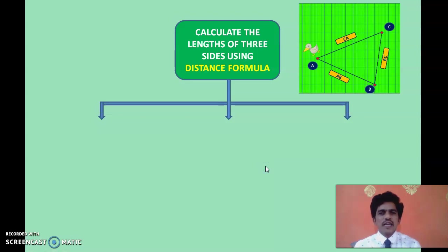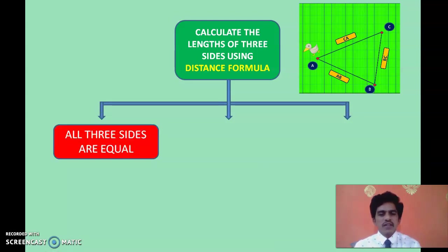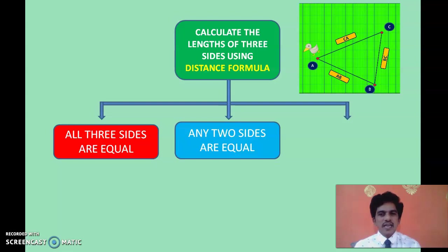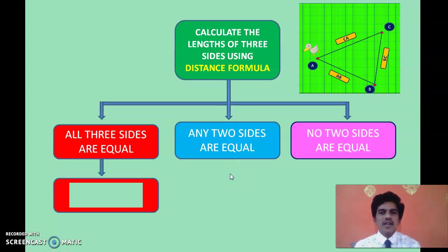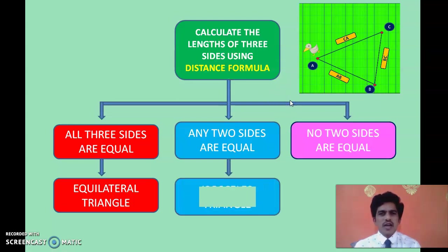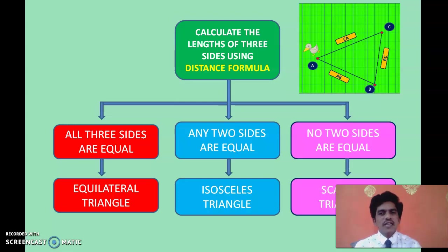In case of triangles, you have 3 different cases. Case 1: all 3 sides are equal — equilateral triangle. Case 2: any 2 of the 3 sides are equal — isosceles triangle. Case 3: no 2 sides are equal, meaning all 3 sides have different lengths — scalene triangle. We have been learning about types of triangles since early classes. If 3 sides are equal it's equilateral, if 2 sides are equal it's isosceles, and if all 3 sides are different it's scalene.